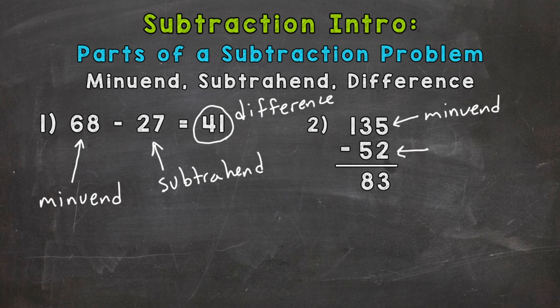52 is the quantity being taken away, how much is being taken away from that 135, so this is the subtrahend.